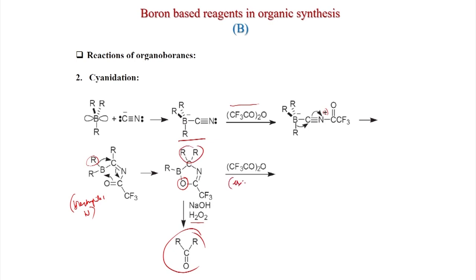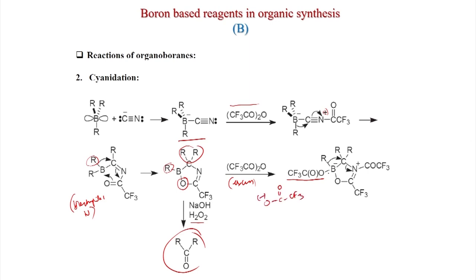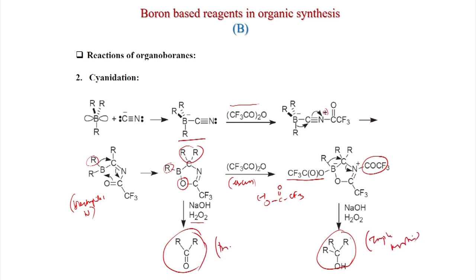Alternatively, with excess trifluoroacetic anhydride, another group migrates: the trifluoroacetate anion adds to boron making it negative (tetra-coordinated borate), enabling a third migration. The COCF3 group activates the intermediate and after NaOH treatment you get the tertiary alcohol. So double migration occurs with one equivalent of trifluoroacetic anhydride, while triple migration requires excess.